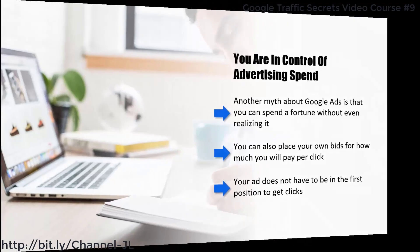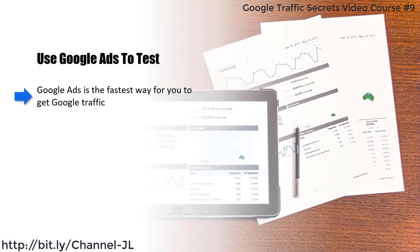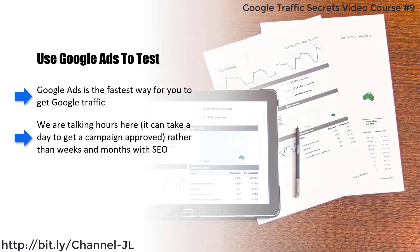Google Ads is the fastest way for you to get Google traffic. It will take you a few minutes to set up your ad campaigns, and as soon as Google approves your ads they will be live. You can use this traffic to test out an offer page, for example — we are talking hours here. It can take a day to get a campaign approved, rather than weeks and months with SEO. So use it to test that your landing pages are converting and make tweaks to improve the conversion rates.